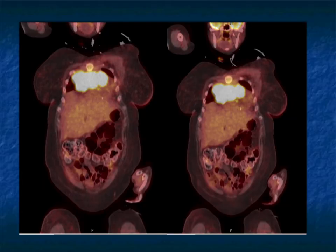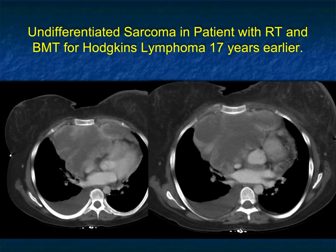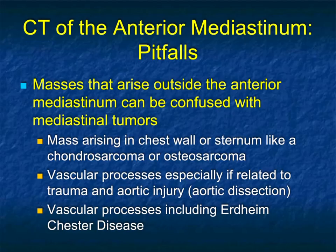On biopsy, this was a very unfortunate case. This patient had Hodgkin's lymphoma, had bone marrow transplant and radiation therapy 17 years earlier. The presentation was initially felt to be recurrent lymphoma, but on biopsy it was an undifferentiated sarcoma, felt to be secondary to radiation therapy. When you have a mediastinal mass in a patient who's had radiation therapy, always think about the possibility of radiation-induced sarcomas.